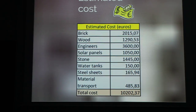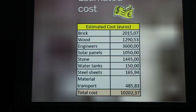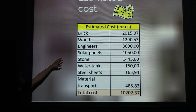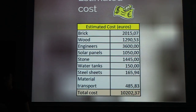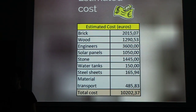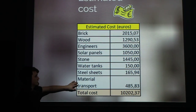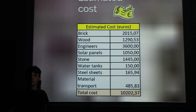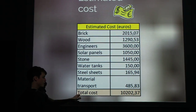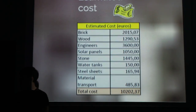Finally, we estimated the cost based on the dimensions of our structures, walls, and foundations. This includes engineers — three people who will go there to teach local workers how to build and replicate the school — as well as solar panels, tools, materials, transport, and living expenses. We ended up with a total cost of 10,000 euros.